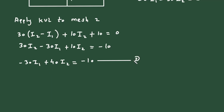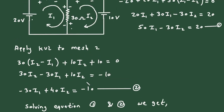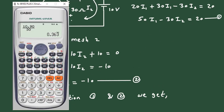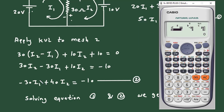Solving equation 1 and equation 2 to get I1 and I2, we use the calculator in mode 5, option 1. Entering the coefficients: from equation 1: 50, minus 30, 20; from equation 2: minus 30, 40, minus 10.